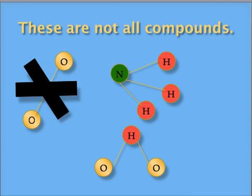It is only a compound if there are two or more different types of elements. Oxygen, O2, is not a compound because the atoms are of the same type.